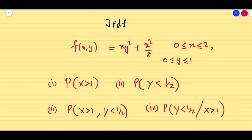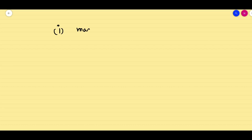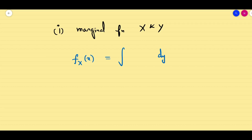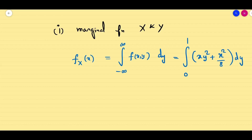If you learn all four steps, whatever problem comes you can easily tackle it. Let us do them one by one. First, as I said in the basics, whatever problem comes we have to find the marginal function — both for X and Y. The marginal function for X means we integrate with respect to Y: from minus infinity to infinity of f(x, y) dy, and since y lies between 0 to 1, we integrate xy² + x²/8 dy.